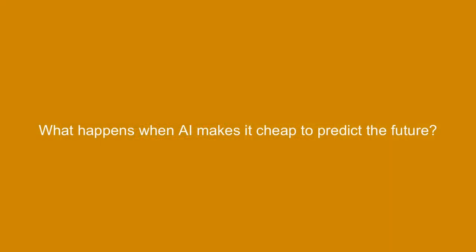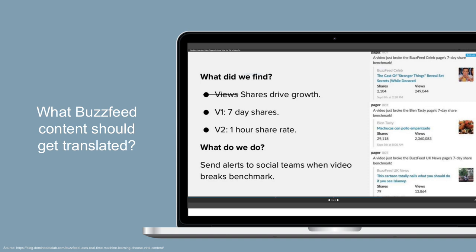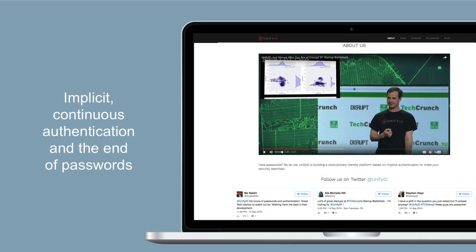Another category of things that AI will make cheap is predicting the future. I got this idea from a Harvard Business Review article saying AI would reduce the cost of making predictions — which I think is absolutely true. For example, BuzzFeed has a framework that identifies videos performing well in one country that might perform well in another. They have an automated pipeline highlighting videos getting lots of views in English and suggesting to human editors: 'We should translate this to French, Spanish, or Chinese.'